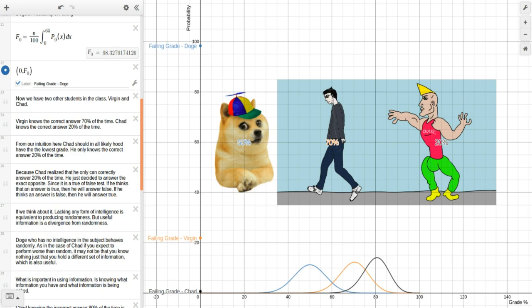Because Chad realized that he can only correctly answer 20% of the time, he just decided to answer the exact opposite. So, since it is a true or false test, if he thinks the answer is true, then he will answer false. If he thinks the answer is false, then he will answer true.